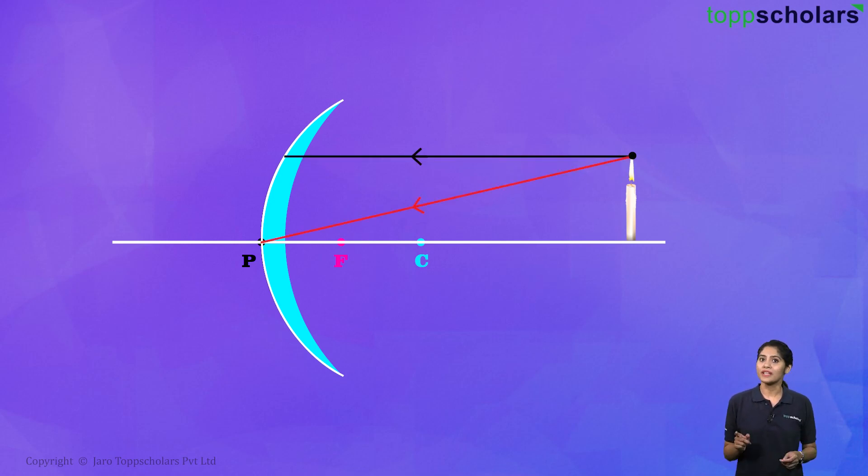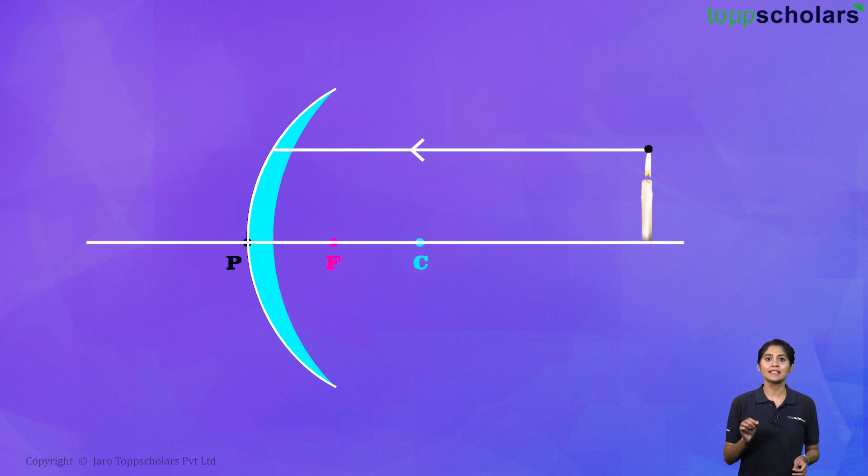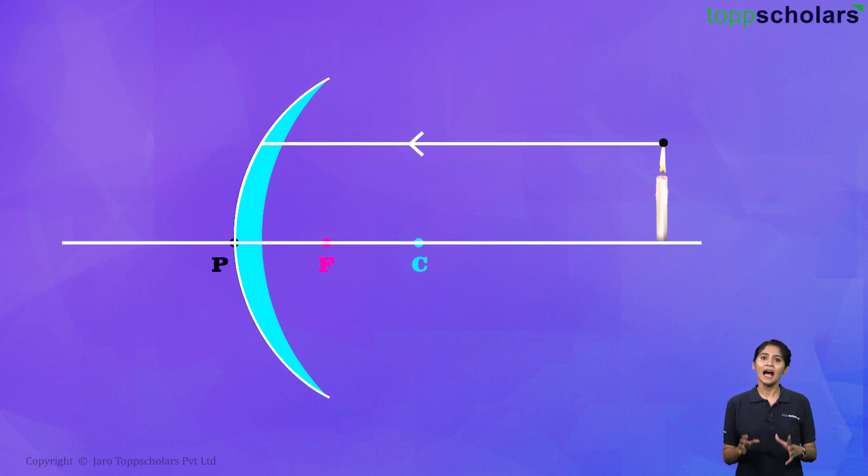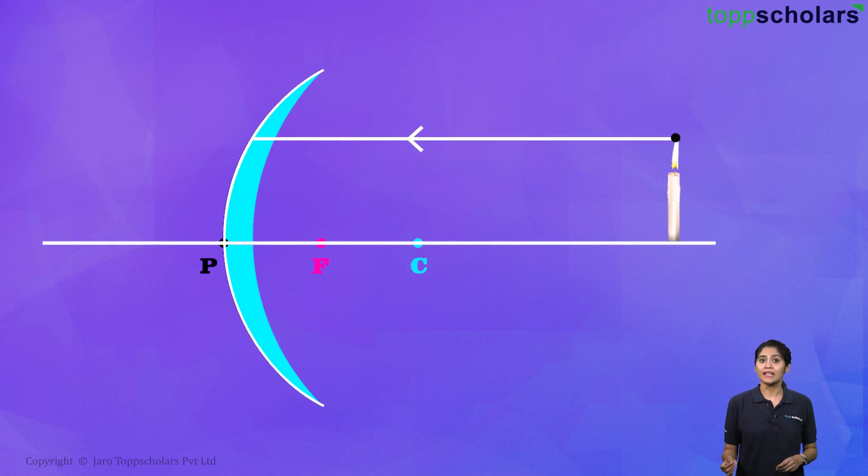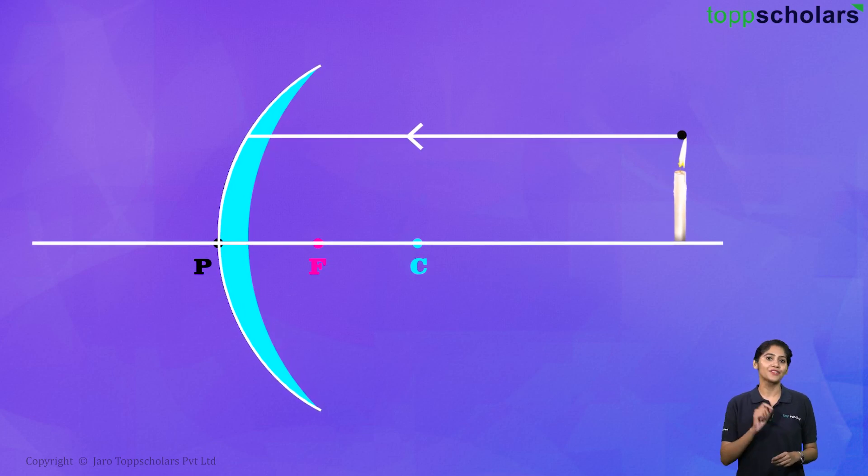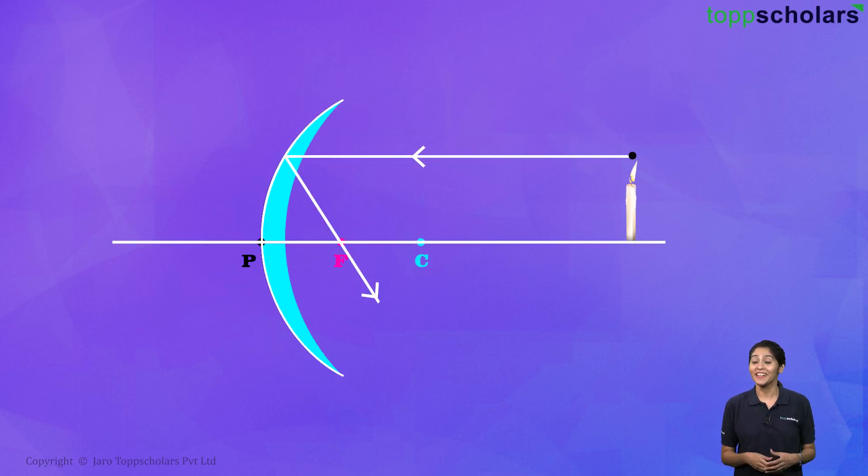So two of those rays we are going to draw over here. Let's draw a ray that goes parallel to the principal axis. The reason we picked this is because we already know that all parallel rays which hit this mirror go through the focus after reflection. So this ray has to go through the focus after reflection. So here it goes.